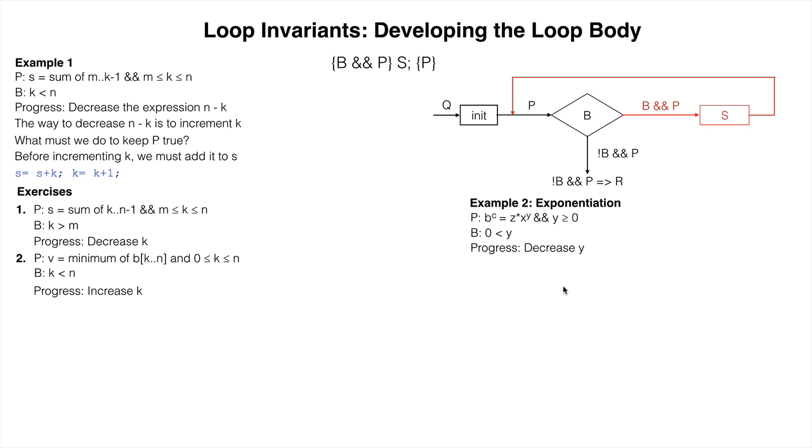We progress towards termination by decreasing the value of Y. The simplest way to decrease Y is to decrement it by one. To see how to maintain the invariant when subtracting one from Y, let's rewrite X to the power of Y using the definition of exponentiation. X to the power of Y equals X times X to the power of Y minus one.